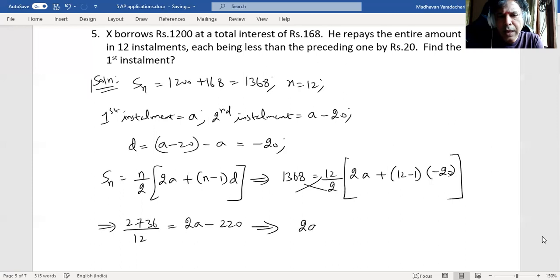We will have 2a equals 2736 by 12 plus 220, that will give us 448, which means our first installment is rupees 224. So that is the solution for this particular problem.